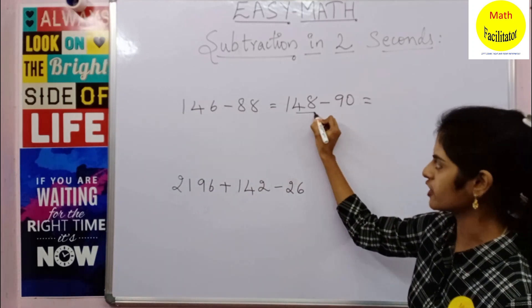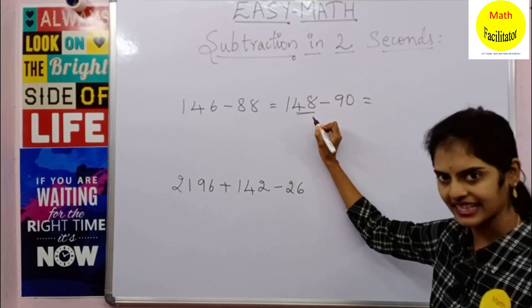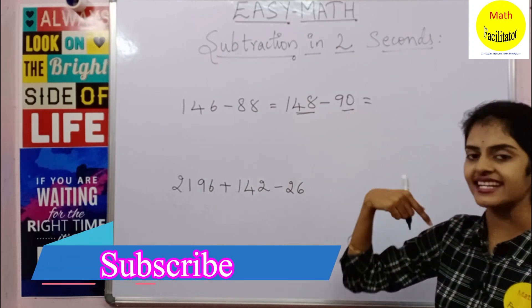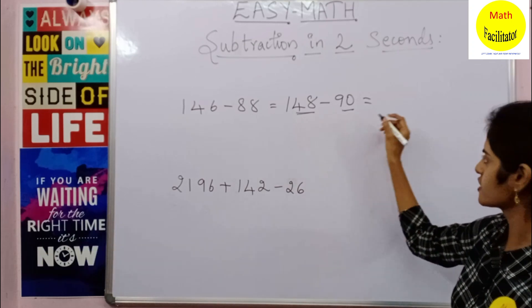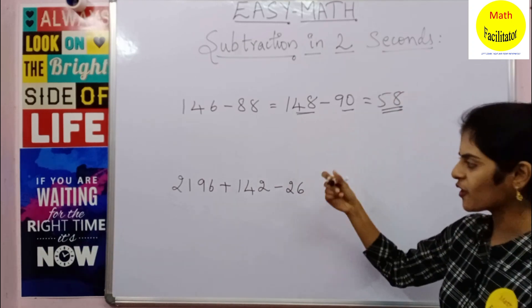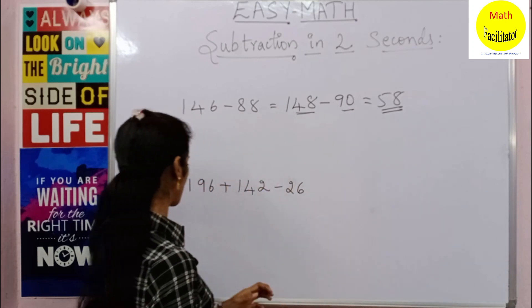The answer is 148 minus 90. Now how can you subtract? You have 48 here extra after 100, and 90 is 10 less than 100, that means you will add 10 to this 48. So the answer is 58.